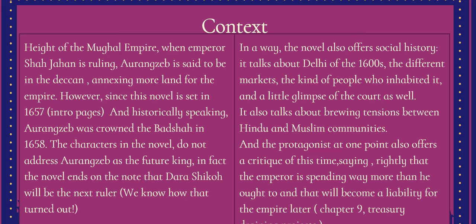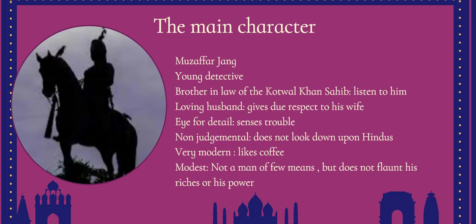In a way, the novel therefore offers social history. It talks about Delhi of the 1600s — the different markets, the kind of people who lived there, the strife between Hindus and Muslims, how people communicated and traveled. It gives us a glimpse of the court as well and talks about the brewing tensions between Hindu and Muslim communities. The protagonist also offers a critique of the time, sometimes commenting on the Empire and the tensions between communities.